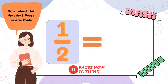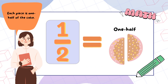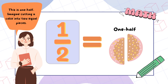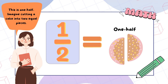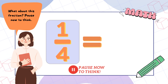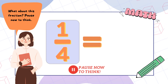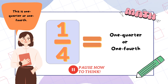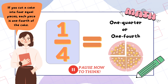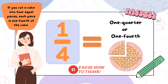What about this fraction? Pause now to think. Each piece is one half of the cake — this is one half. Imagine cutting a cake into two equal pieces. What about this fraction? Pause now to think. This is one quarter, or one fourth. If you cut a cake into four equal pieces, each piece is one fourth of the cake.